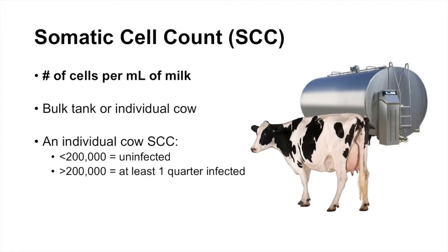We can look at this measurement either at the bulk tank level — the bulk tank that accompanies each farm where the cow's milk will go — or we can look at the individual cow. Oftentimes you'll hear a producer give their overall bulk tank somatic cell count, as well as the somatic cell count of one or two animals they think have mastitis. An individual cow that does not have mastitis would be expected to have a somatic cell count of less than 200,000 cells per milliliter from each of the four quarters. When an individual quarter rises above 200,000 cells per milliliter, that quarter is considered infected.